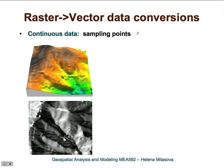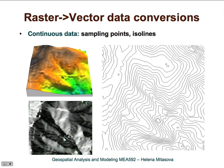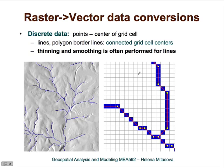For raster to vector data conversions for continuous data, that conversion is relatively simple. We can, for example, sample the continuous surface and represent it as points, or we can derive isolines — a very common task — and transform the raster to a vector representation.